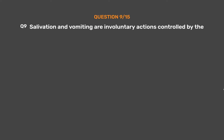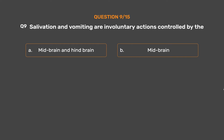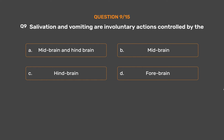Question No. 9. Salivation and vomiting are involuntary actions controlled by the: Option A - Midbrain and hindbrain. Option B - Midbrain. Option C - Hindbrain. Option D - Forebrain.